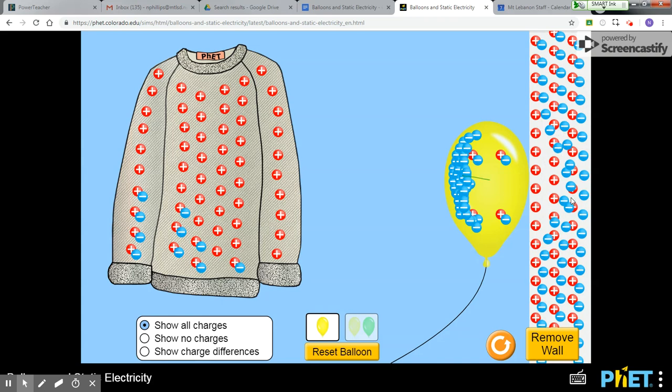The positives aren't going anywhere because they're bound with the neutrons in the nucleus. Only the electrons are free to go. What that does is that creates a negatively charged zone. Over here on the far end of the wall that leaves a positively charged zone at the end of the wall closest to the balloon.